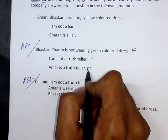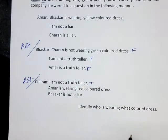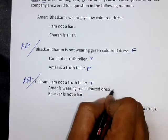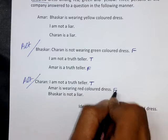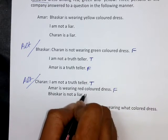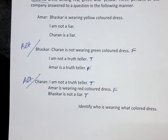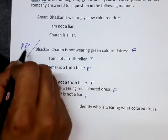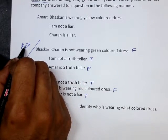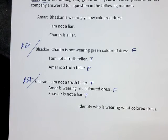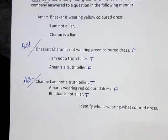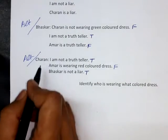Which means the first statement made by Bhaskar is false and the last statement is also false — it follows a false-true-false pattern. Likewise, for Charan, the first statement is true, the next statement is false, then the third statement is true. Kindly recall how 'I am NOT a truth teller' makes the person an alternator — I have explained this clearly in my first video.